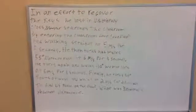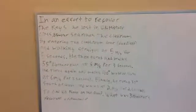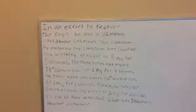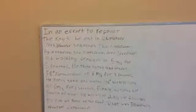Today we will be solving a resultant displacement problem that reads: In an effort to recover the keys he lost in U.S. history class, Brewster searches the classroom by entering the classroom door due east and walking straight at 5 meters a second for 5 seconds.